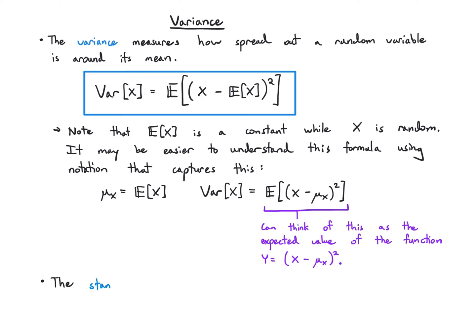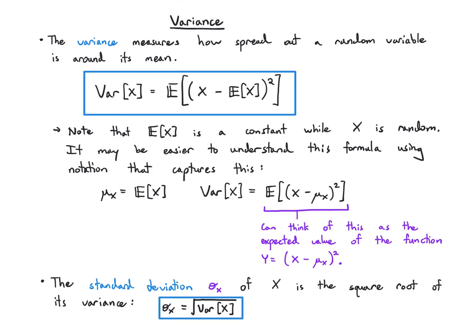We also introduced the standard deviation, written sigma sub x, which is the square root of the variance. So you calculate the variance and take the square root — that's the standard deviation. Sometimes we also write the variance as sigma x squared. The reason we like the standard deviation is that when calculating variance we're squaring things, which squares the units, and the square root brings us back to the original units of the problem.